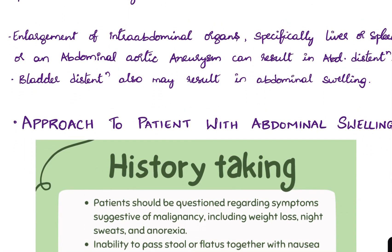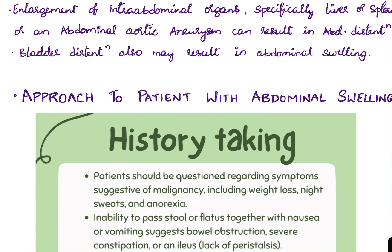Enlargement of intra-abdominal organs, specifically the liver or spleen, or an abdominal aortic aneurysm, can result in abdominal distension. Bladder distension may also result in abdominal swelling.